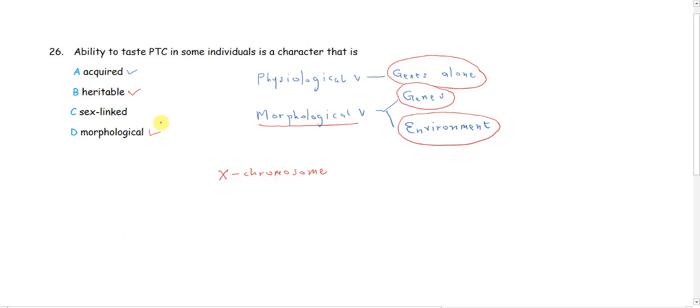So, which option best addresses the question in front of us? If you say it is acquired, we've already said that that will fall under morphological. But you cannot particularly see the ability of someone to taste PTC. It is not something you can see. The person has to tell you whether he or she is tasting PTC or not.